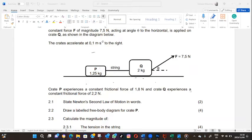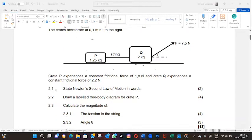Crate P experiences a constant frictional force of 1.8 newtons. Crate Q experiences a constant frictional force of 2.2 newtons.